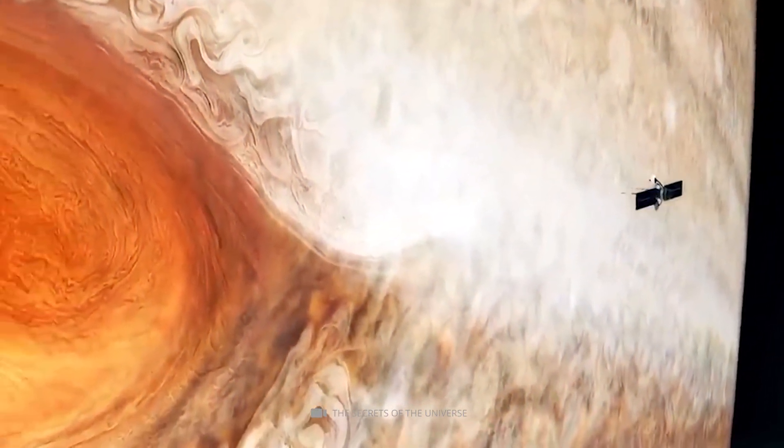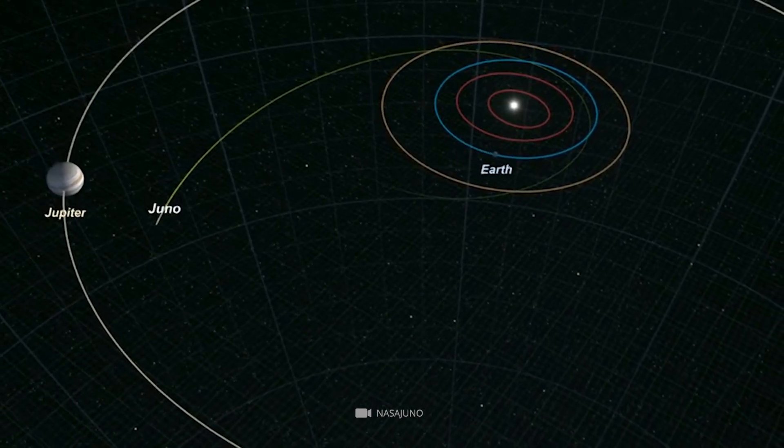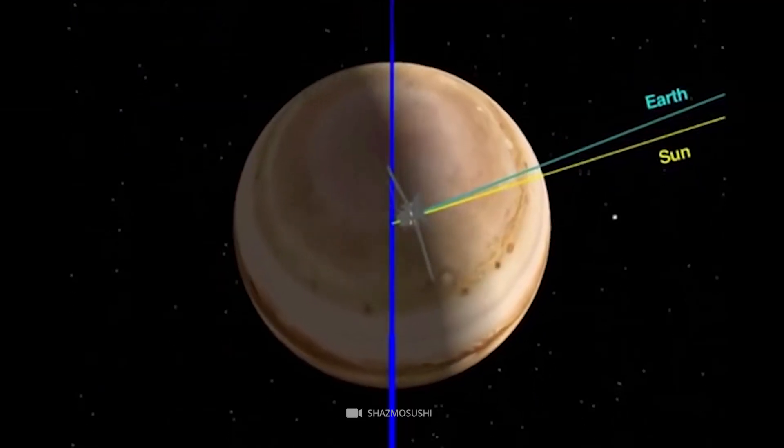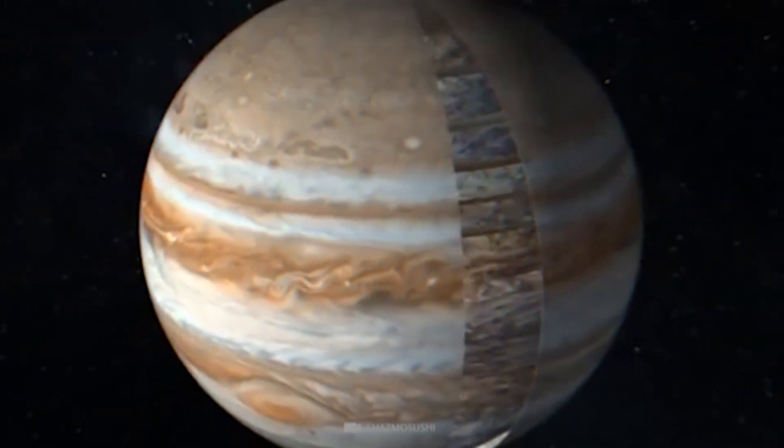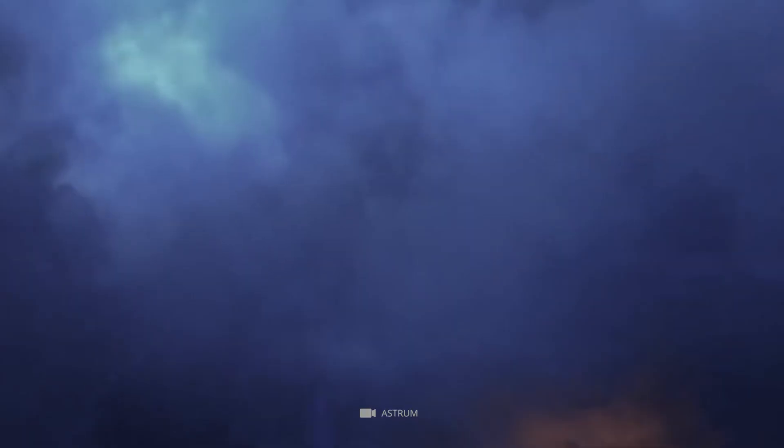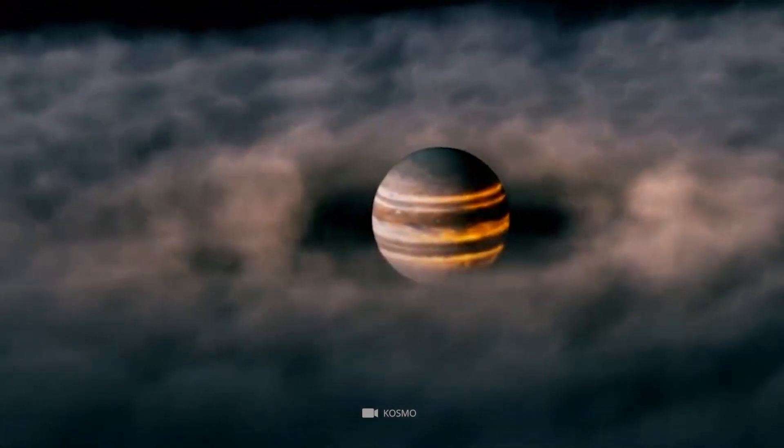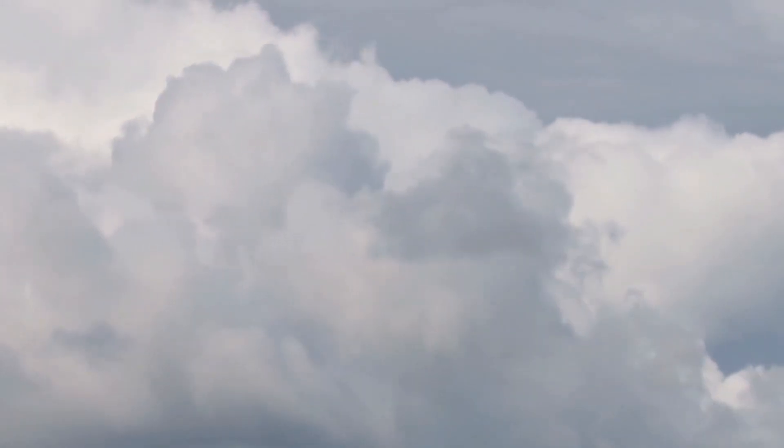The Juno space probe orbits Jupiter once every 53 days. As it passes around the planet, it takes images from one side of the gas giant to the other. These images give us a detailed view of Jupiter's clouds from their distinctive forms. These clouds exist in a perpetual state of motion, with the main collective cell reaching a staggering 64,000 feet or 12.6 miles in height.